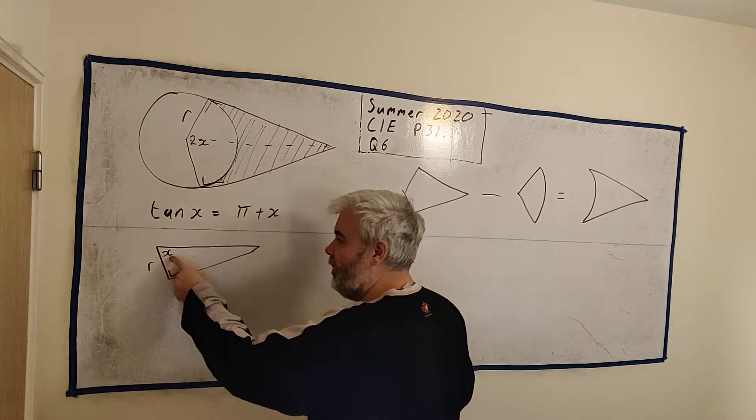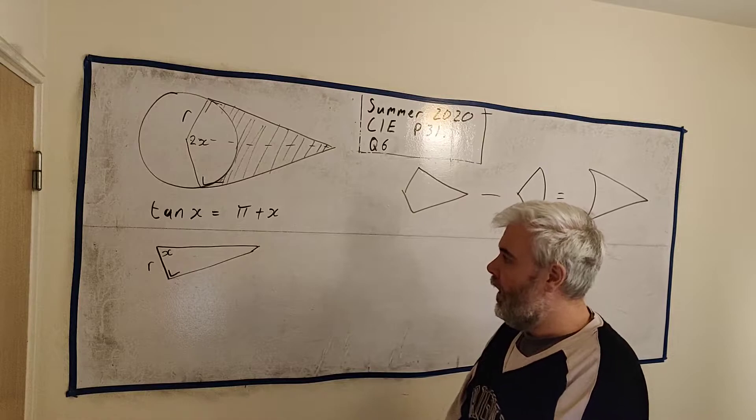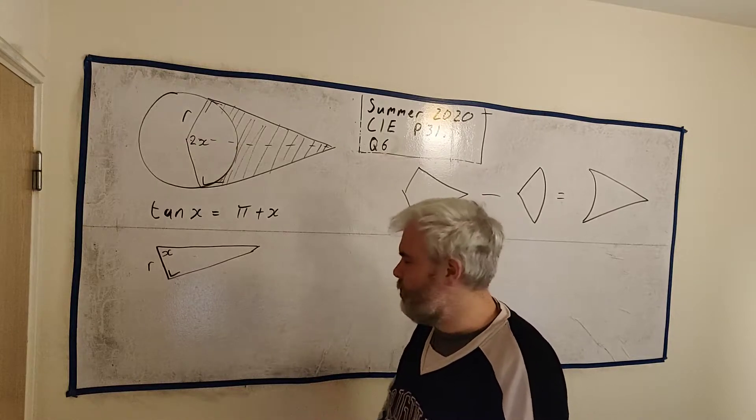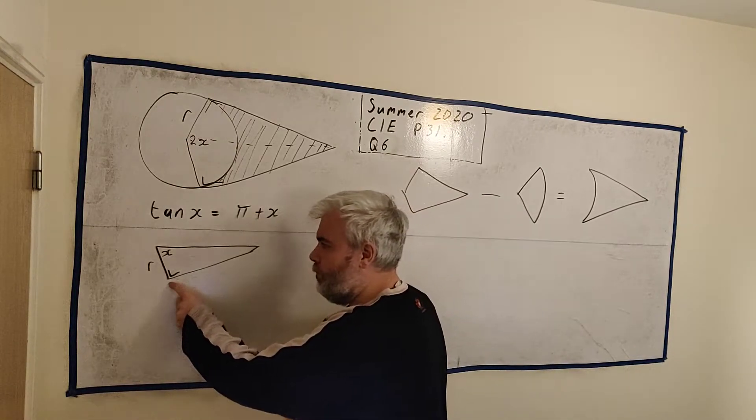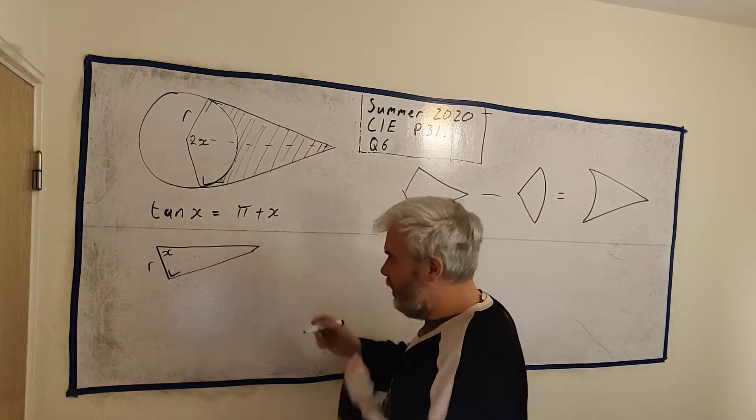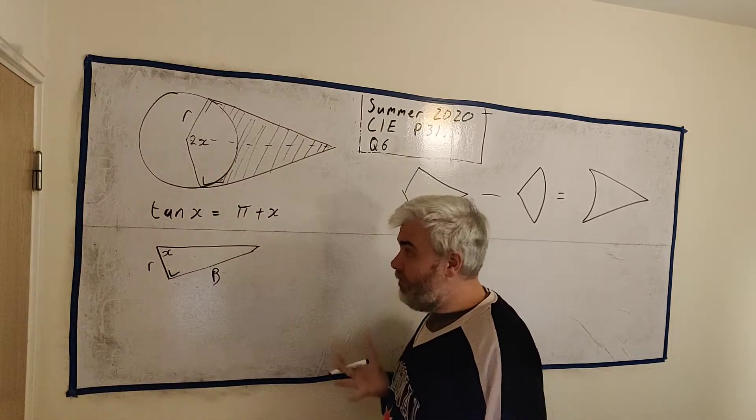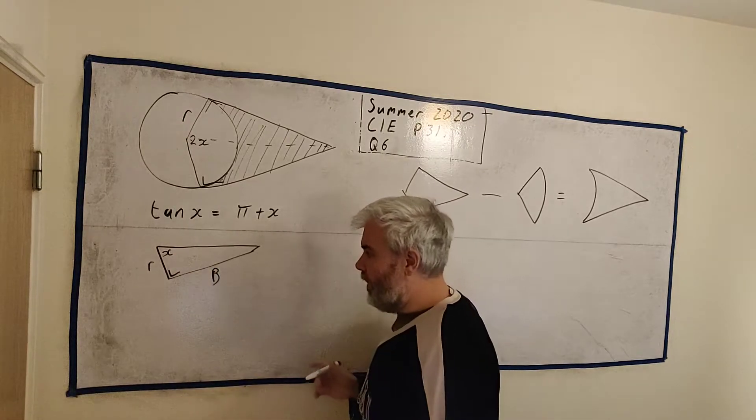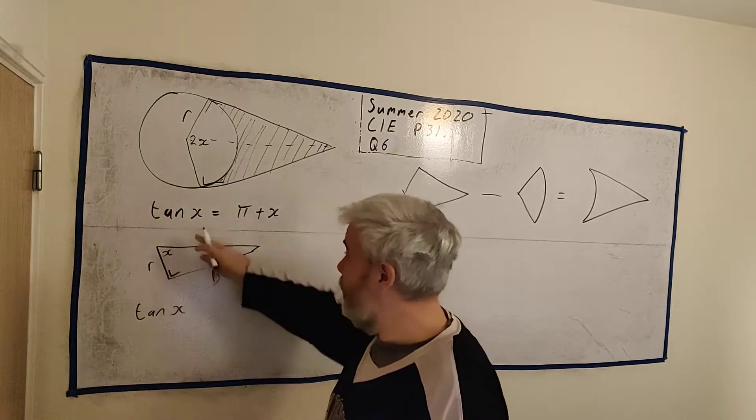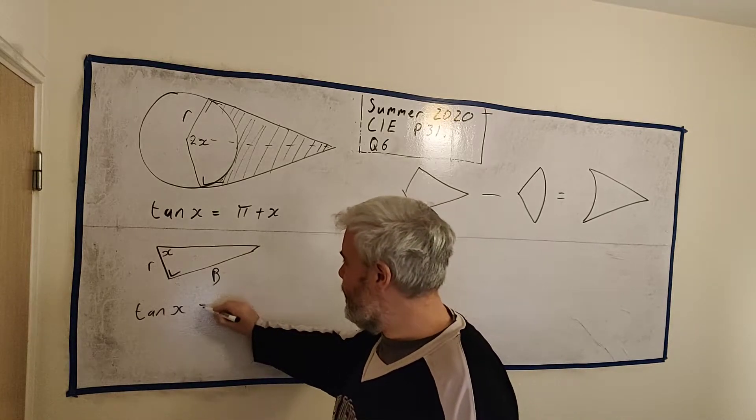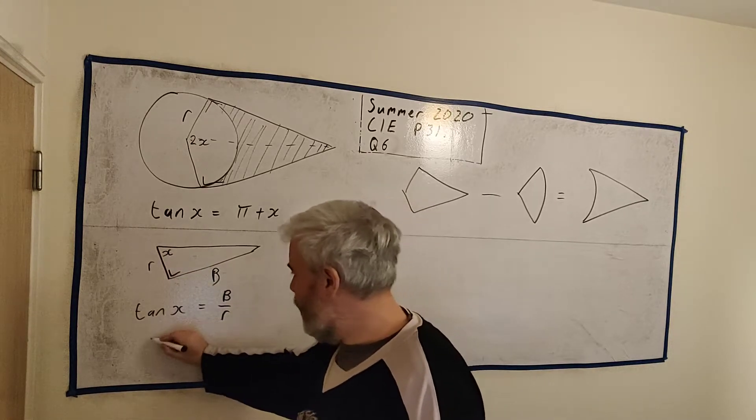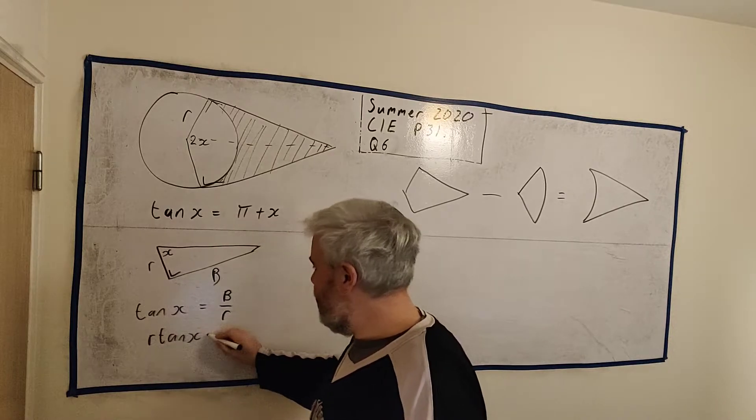So first, I'll get this triangle. We have a right angle. That's good. We know the length of this is r. And we actually know the angle up here. This angle is 2x, this large angle. So half of it is just x. So we actually know the angle. So that's three pieces of information. So we can solve this triangle. We have a length, we have an angle, and we have an angle. So we have enough pieces of information.